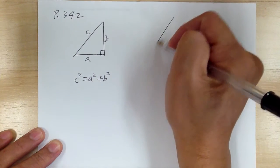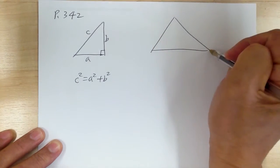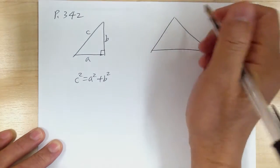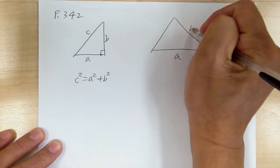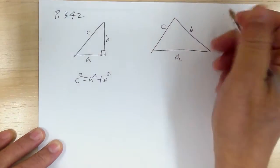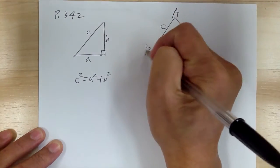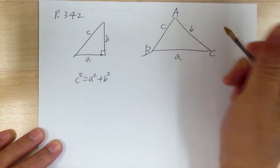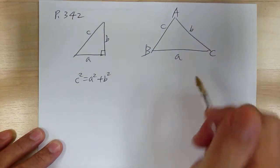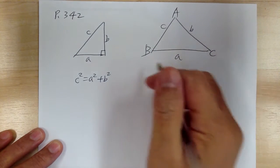But when you have a non-right triangle, just any triangle, with sides A, B, C and angles A, B, C, for the non-right triangle you have to use the law of cosines.